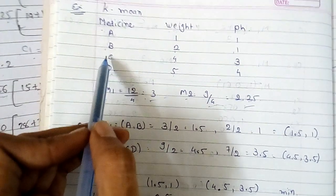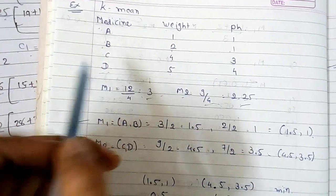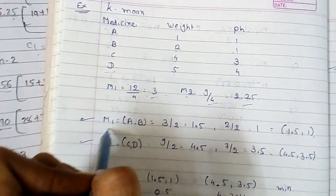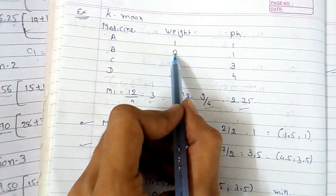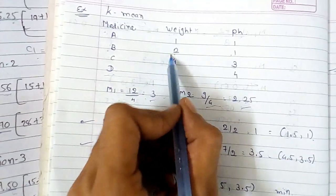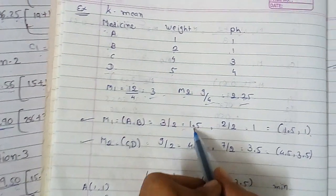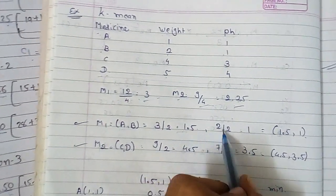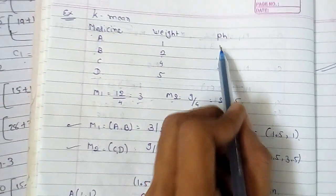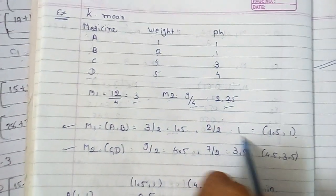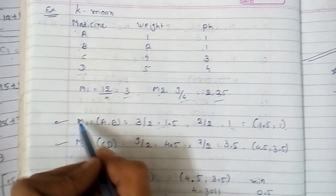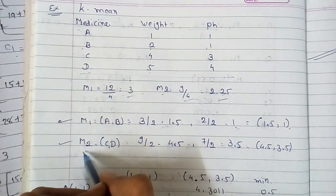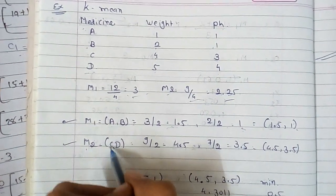Now consider any two values. For m1 I'm considering A and B, and for m2 I'm considering C and D. To find out m1 for A and B, add 2 plus 1 divided by 2 for the x-axis, and 1 plus 1 divided by 2 for the y-axis, that is 1. So you will get 1.5 and 1, that is your m1 for A and B.